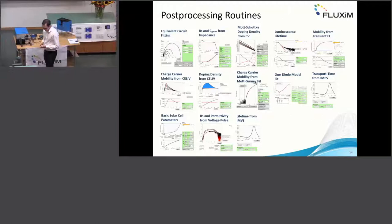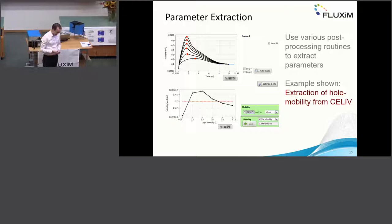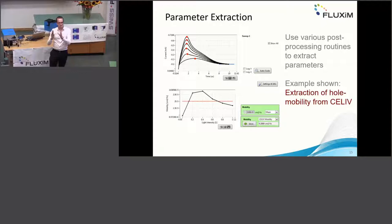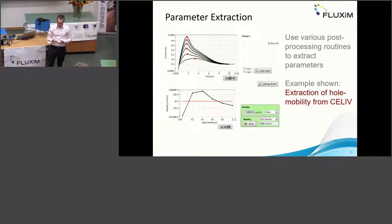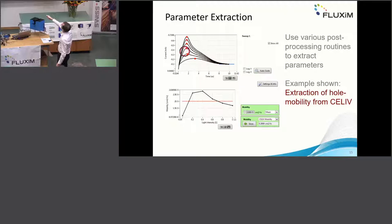One example in more detail: photo-CELIV. There is a simple formula where you put in the peak time — the time where the current reaches its maximum — and the ramp rate, and from that you calculate the charge carrier mobility. This is done automatically: the peak is marked in red, and the mobility is exported as a function of light intensity.